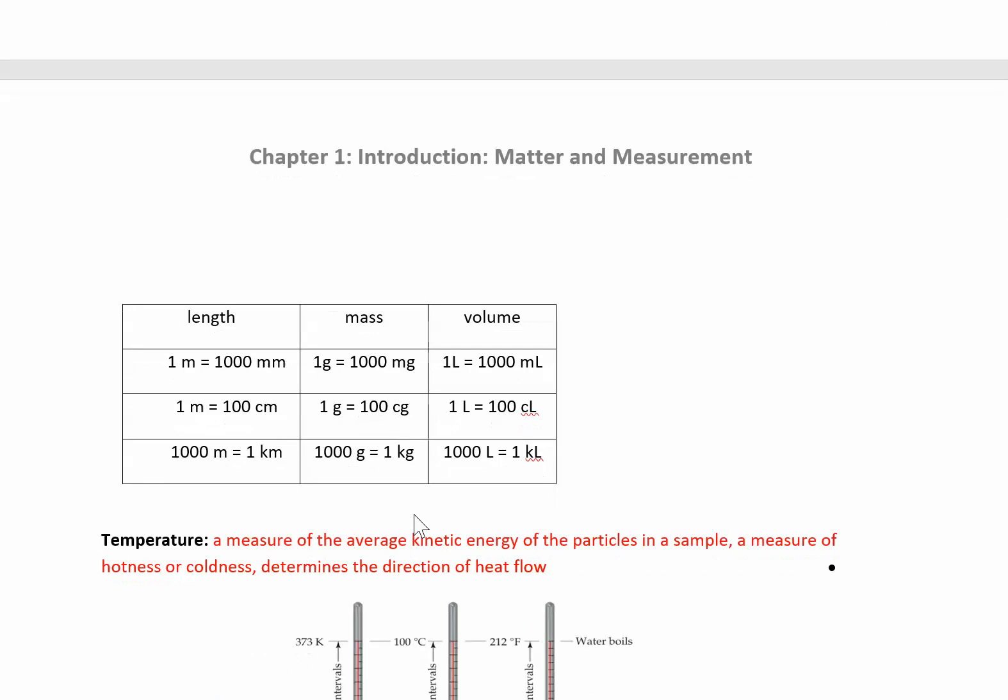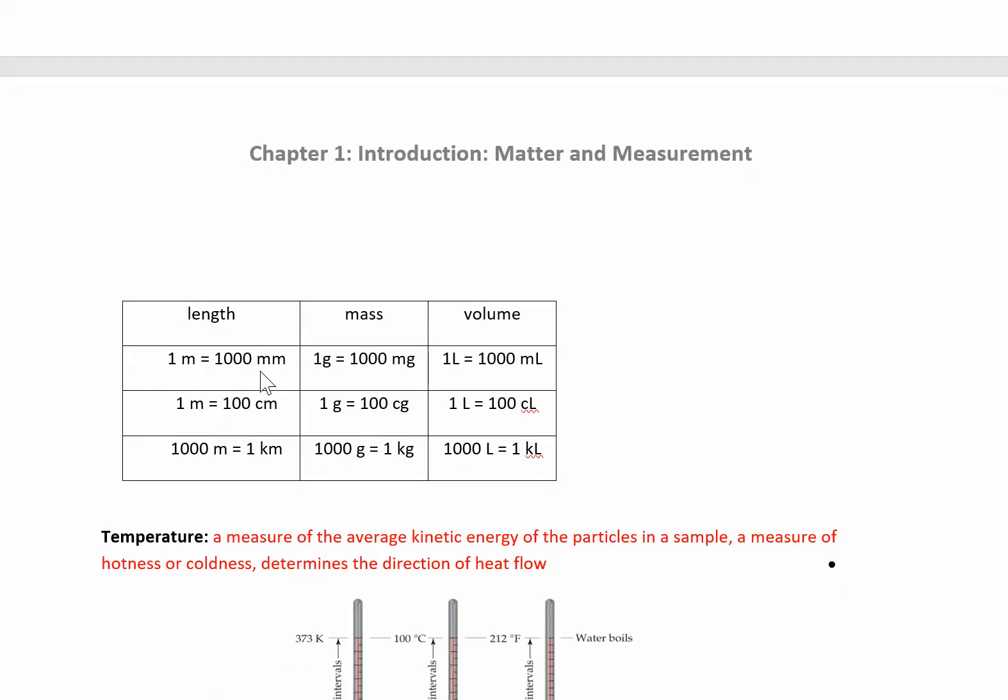You can see on this next page, this highlights all the things that you really should have memorized. One meter is a thousand millimeters. Imagine that meter stick, there are a thousand little tick marks on it. There are a hundred centimeters in one meter, and if you put a thousand of those meter sticks together then you get a kilometer. Kilometers are things that you run like a 5K. Later on this chapter we'll be converting these to inches and miles. A meter is about like a yard, which is like three feet.